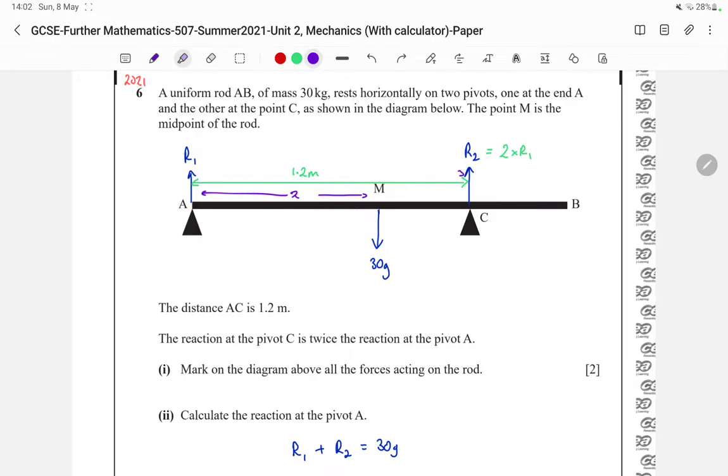Since M is the midpoint of the rod and the mass of the rod is 30kg, the weight acts through the center M. So we have 30g acting at point M and acting downwards. At each of those pivots A and C we will have a normal reaction, so we can call them R1 and R2. There's always a normal reaction whenever you have a pivot.